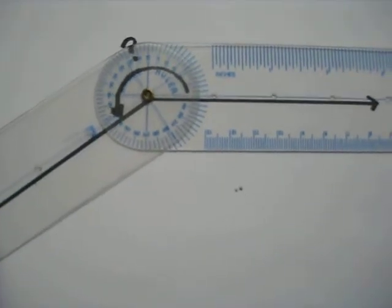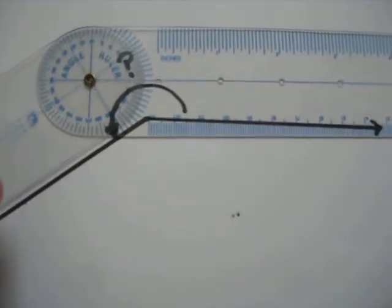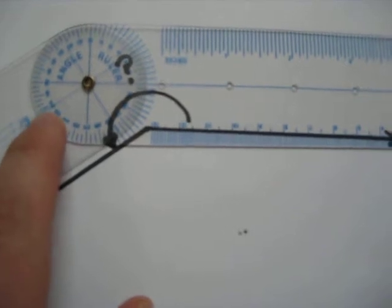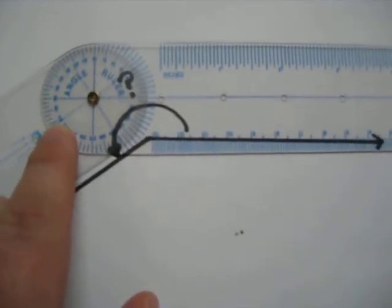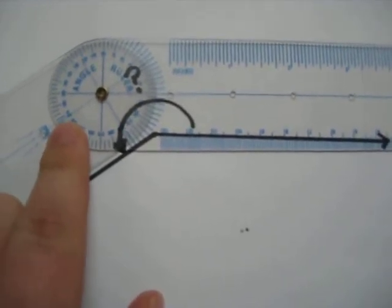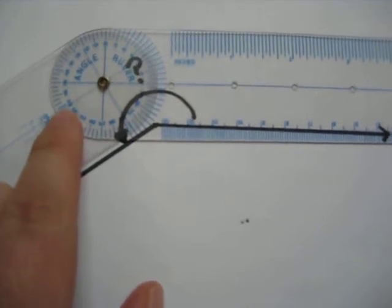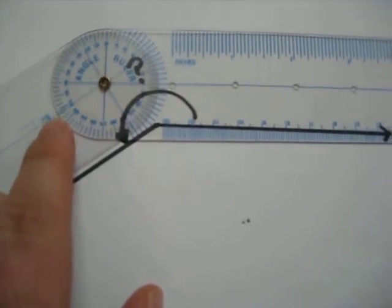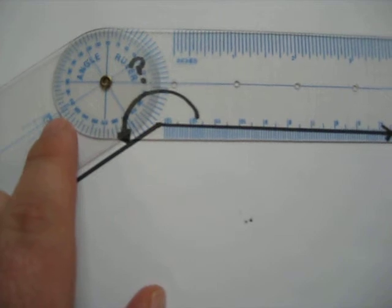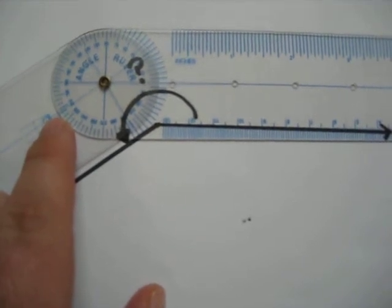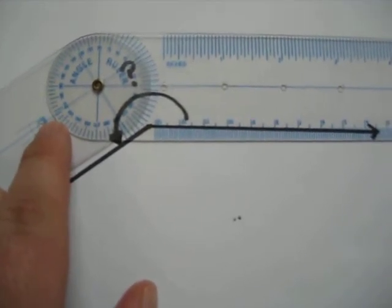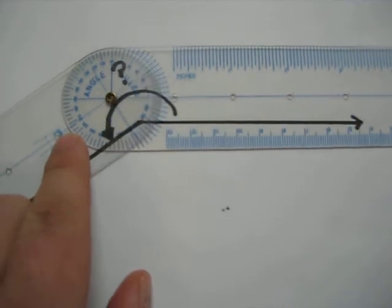And then once I've got that I can remove the angle ruler, and I can read that this is between 210 and 215 degrees. When I go out and look at the increments out here I can see that it's closer to 215 degrees. It's one degree away. It's 214 degrees.